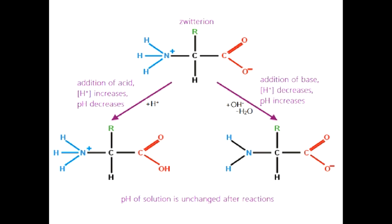Alpha amino acids, peptides, and proteins also have buffer properties because they contain carboxylic groups, amino groups (basic groups), and acetyl groups. If OH⁻ ions are added to the buffer solution, the amino group reacts with them to neutralize them. If hydrogen ions are added, the carboxylic group accepts the hydrogen ion and pH remains stable. We will discuss this again when we study alpha amino acids.